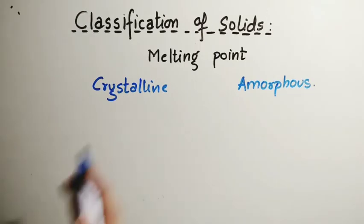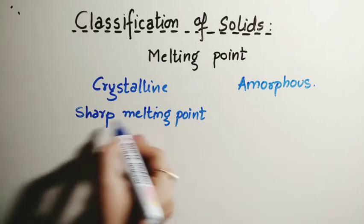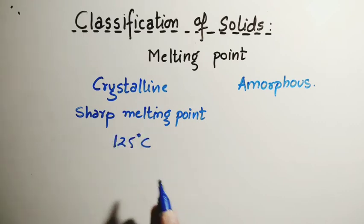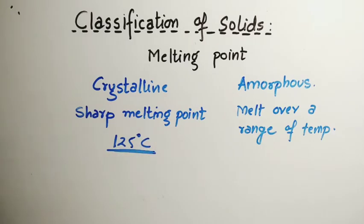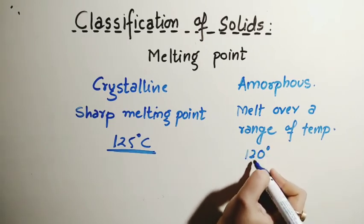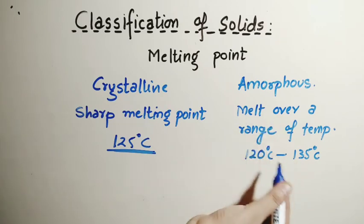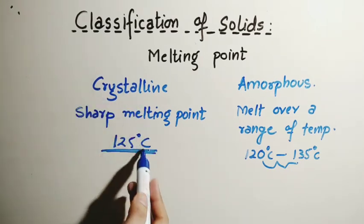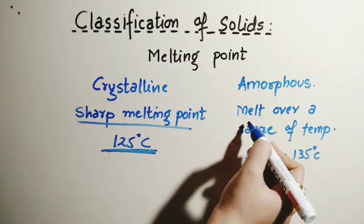If we compare melting points: crystalline solids possess a sharp melting point, meaning the melting point has a fixed value. For example, it melts at exactly 125°C (hypothetical value). Whereas in the case of amorphous solids, they melt over a range of temperature — for example, from 120°C to 135°C. So for amorphous, a fixed point is not there, but a range exists. This explains what is meant by sharp melting point versus melting over a range.